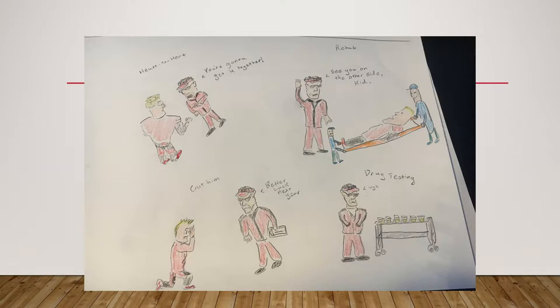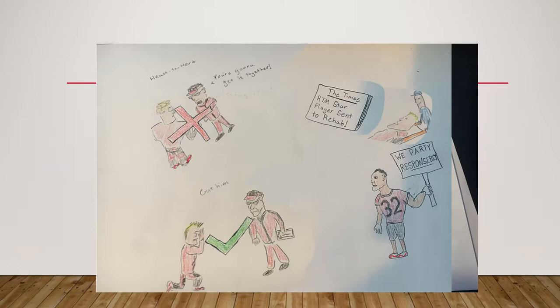Thomas sees that all his decisions are basically programmed decisions — routine for this kind of behavior — but he cannot think of anything else. He could bring Brian into the process, but he knows that though Brian can come up with non-programmed decisions, he experiences escalating commitment, which would be bad if his decision turns out not to work well. In each of the decisions he comes up with, Thomas tries to think of the worst outcome, and by doing this, he is his own devil's advocate. Thomas does not want Peter sent to rehab because that would cause unnecessary media attention.